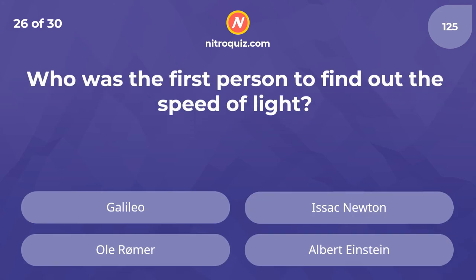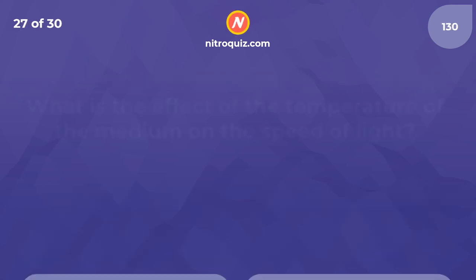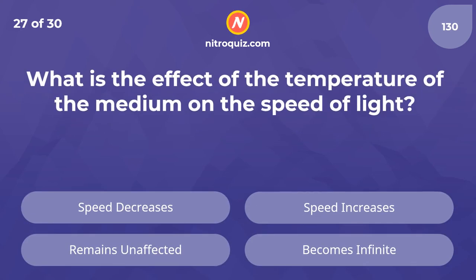Who was the first person to find out the speed of light? The answer is Ole Rømer. What is the effect of the temperature of the medium on the speed of light? The answer is it remains unaffected.